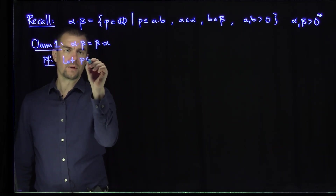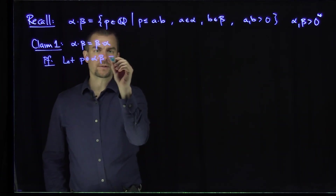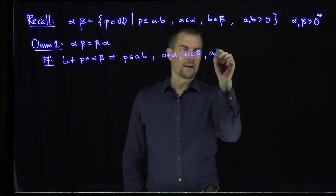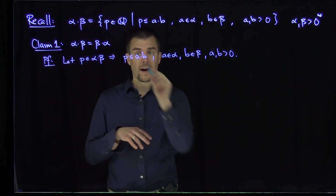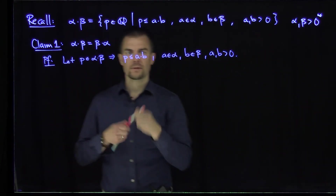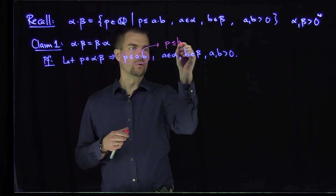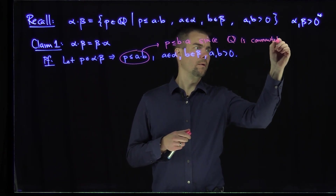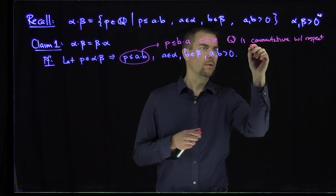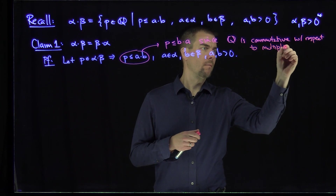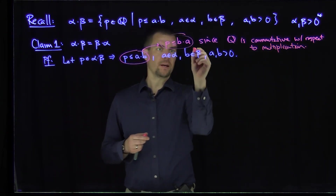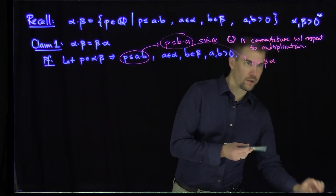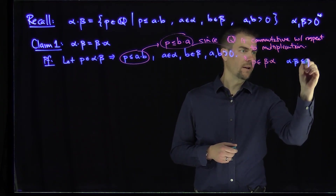Let p be in α·β. This implies that p is less than or equal to a·b for a in α, b in β, with a and b greater than zero. Now, since ℚ is commutative, I can switch the roles of a and b here. This implies that p is less than or equal to b·a, since ℚ is commutative with respect to multiplication. And that exactly means that p is in β·α. So we've shown one inclusion: α·β is contained in β·α.